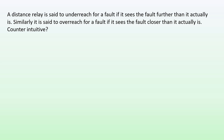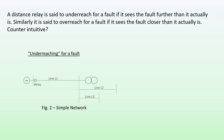A distance relay is said to under-reach for a fault if it sees the fault further than it actually is. Similarly, it is said to overreach for a fault if it sees the fault closer than it actually is. This may seem counterintuitive, but it will become clearer as we move along.